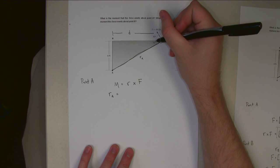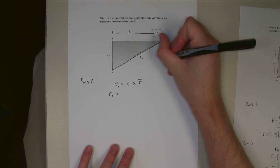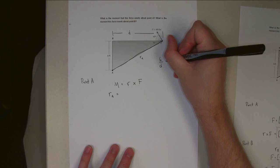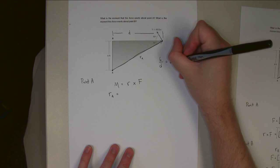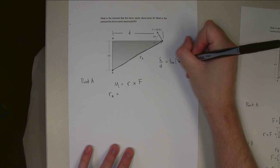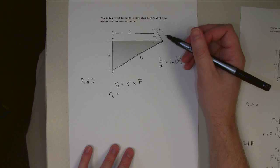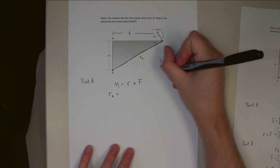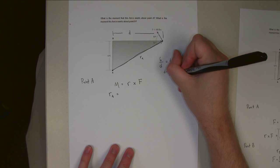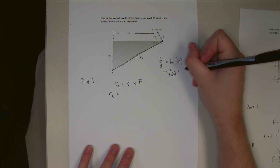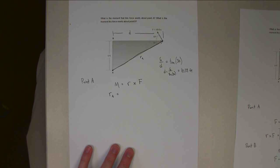In this case it would be opposite over adjacent, so 6 over D is going to be equal to the tangent of 30 degrees right here. So if I do that, I find that D is equal to 6 over tan 30, which is 10.39 feet. Just a little bit of geometry to start there.